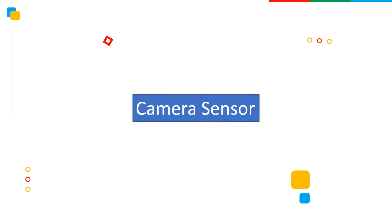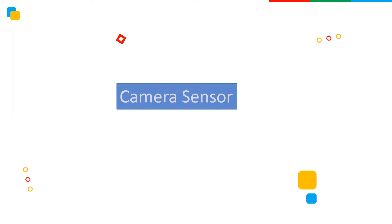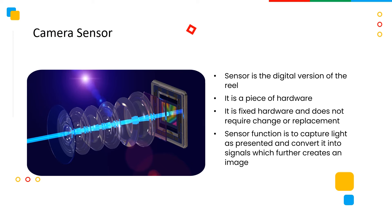Welcome back friends. Today I will explain the camera sensor. In the upcoming lessons we will learn about the exposure triangle, however in order to understand the exposure triangle we first need to know what a sensor is. The image sensor, or the camera sensor, is the digital version of the 35mm roll.